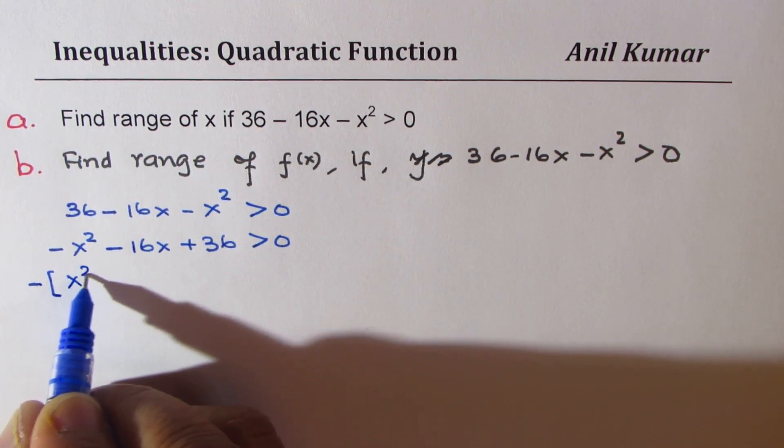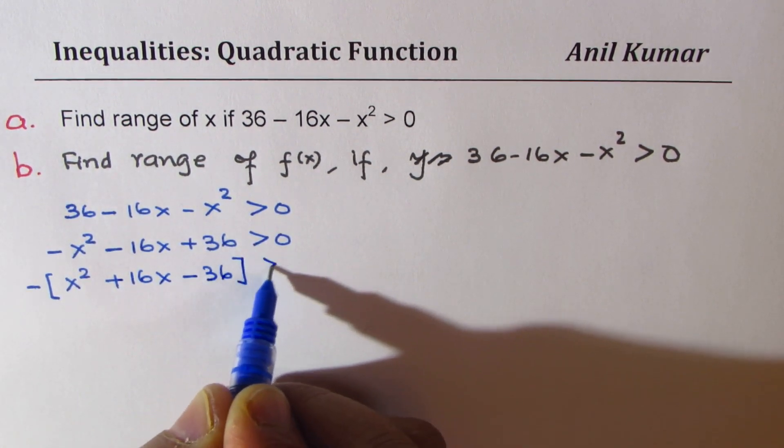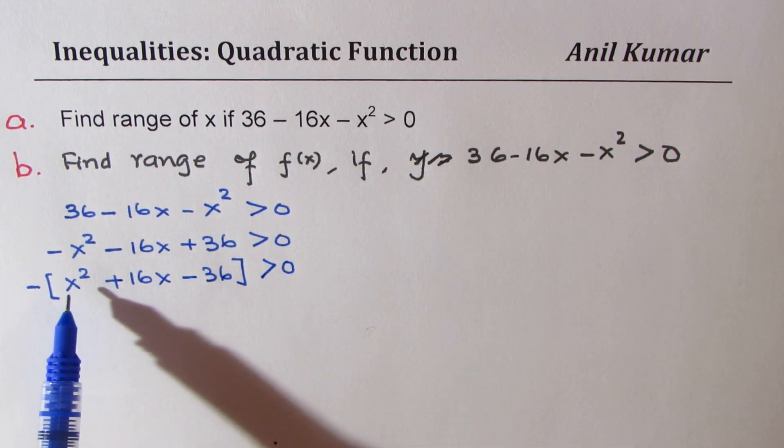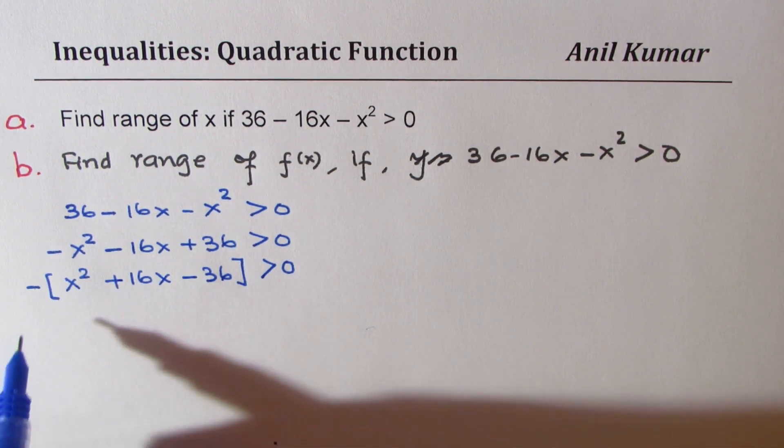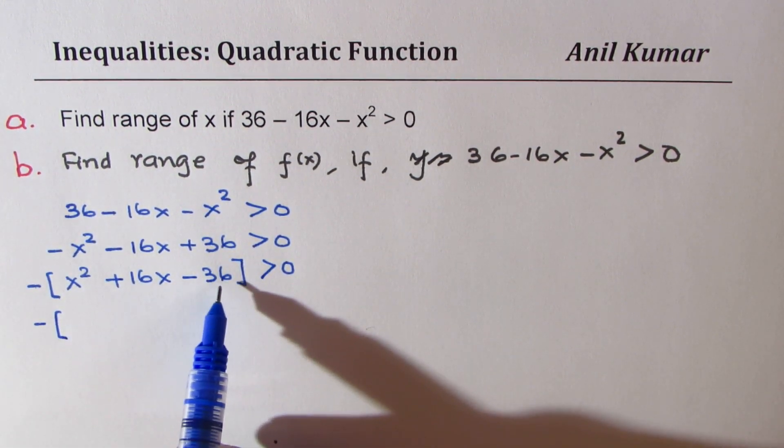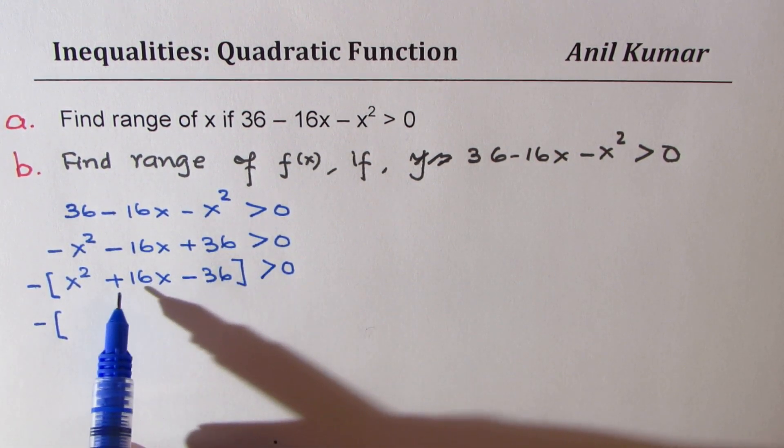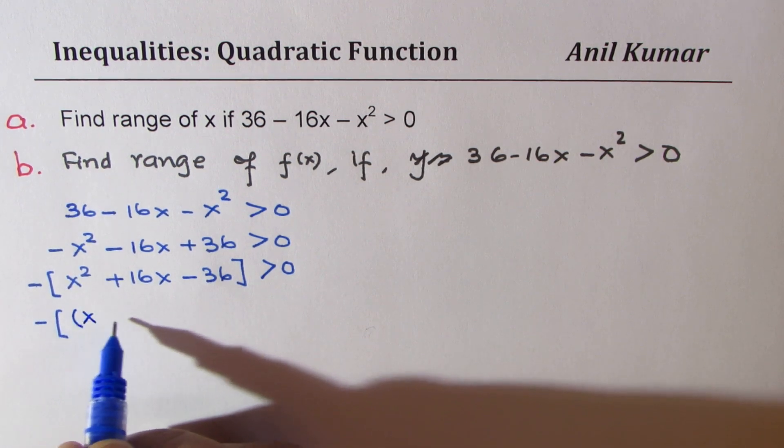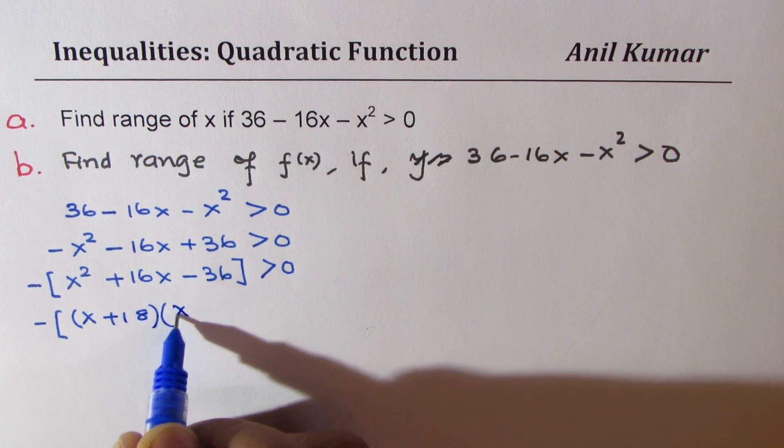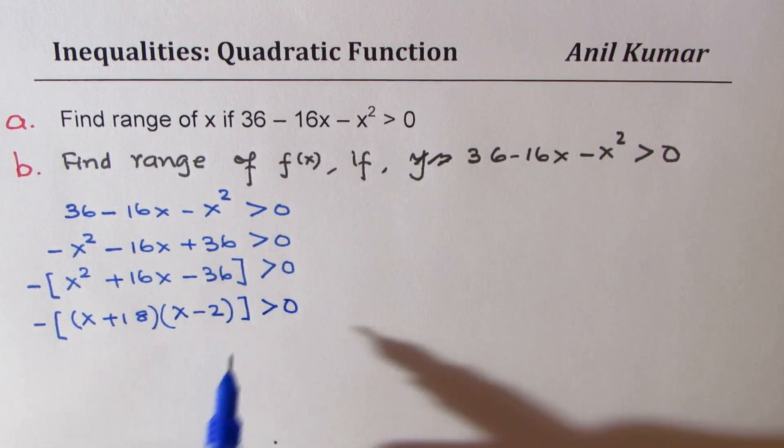So we get x squared plus 16x minus 36 greater than 0. Now, what we could do is factor this. Product minus 36, sum as 16, that means 18 and 2. So we get (x + 18)(x - 2) greater than 0.